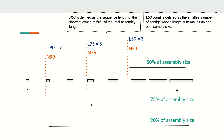To summarize formally: N50 is defined as the sequence length of the shortest contig at 50 percent of the total assembly length, and L50 is the number of contigs that form that 50 percent. This calculation is based on the total assembly size.